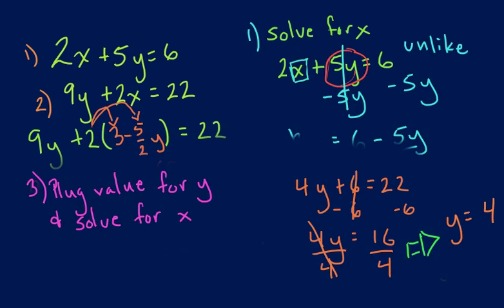So you plug your value for y, and you solve for x. So we remember, if we look back at our old equation, or when we solve for x, x equaled 3 minus 5 over 2y.